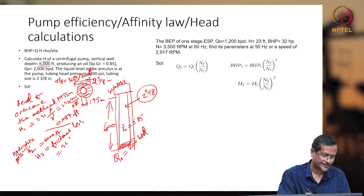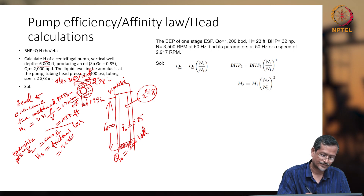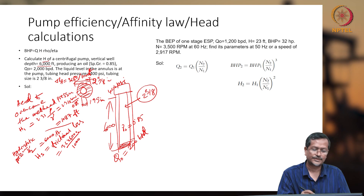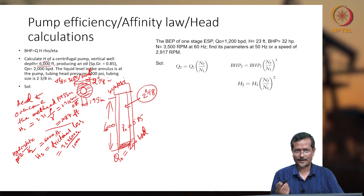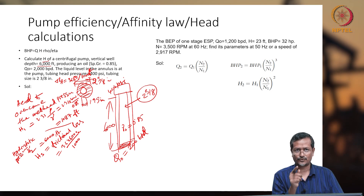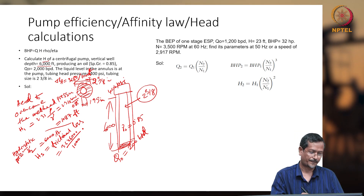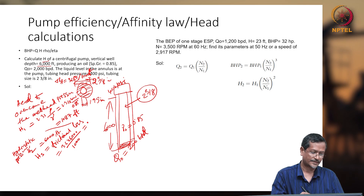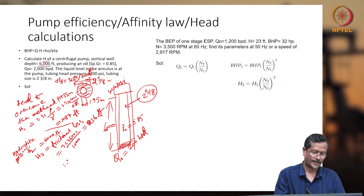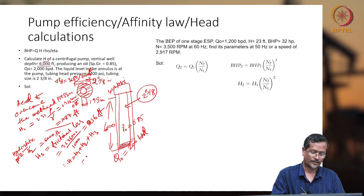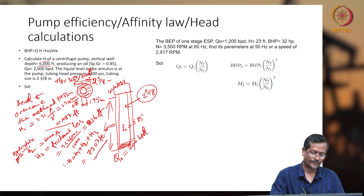For frictional loss, assume delta-HF equals 36 feet per 1000 feet. So H3 = 36 × 6000 / 1000. You can get this friction value from a chart, or calculate it if the friction factor is given. This gives H3 = 216 feet. Total head H = H1 + H2 + H3 = 1087 + 6000 + 216 = 7303 feet. The pump should work for this head.